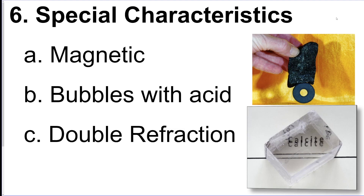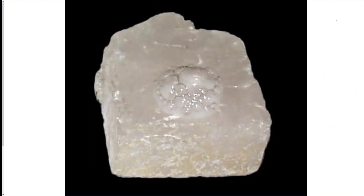Some minerals have special characteristics — magnetite is magnetic, calcite bubbles with acid, and calcite also has this cool double refraction when you put it above text so you can identify it as calcite. Here's what it looks like bubbling with acid.